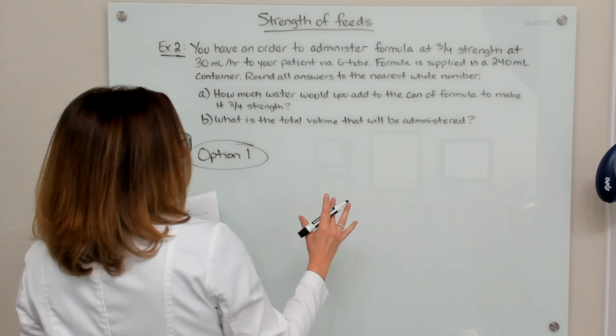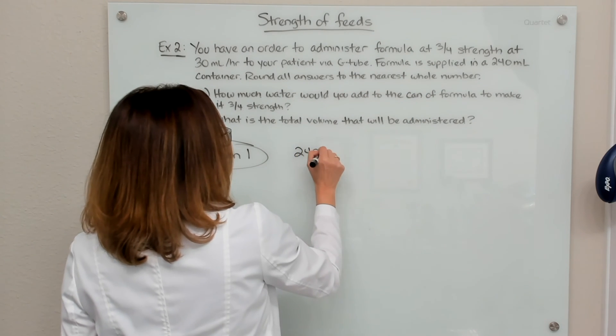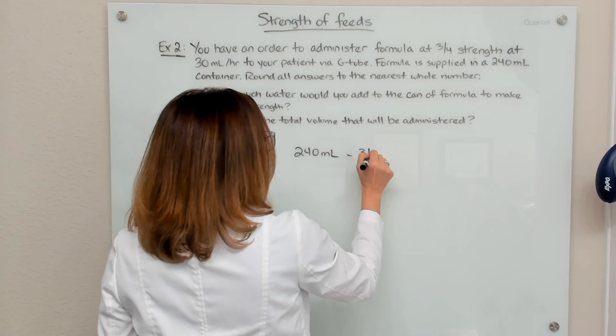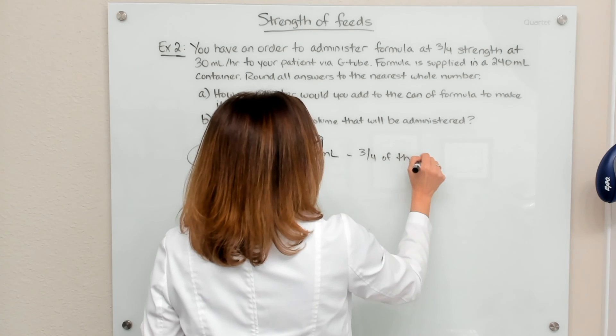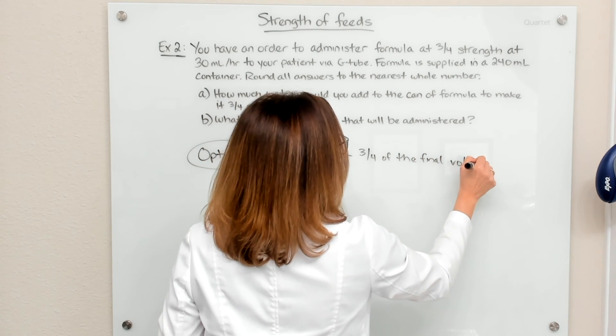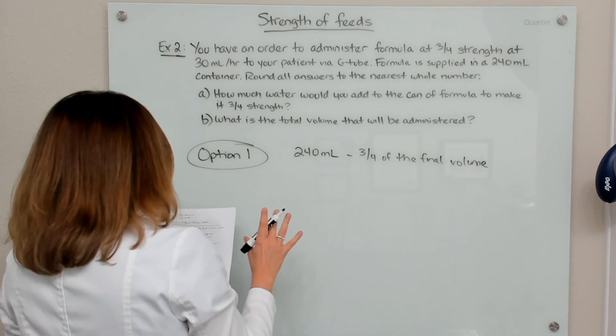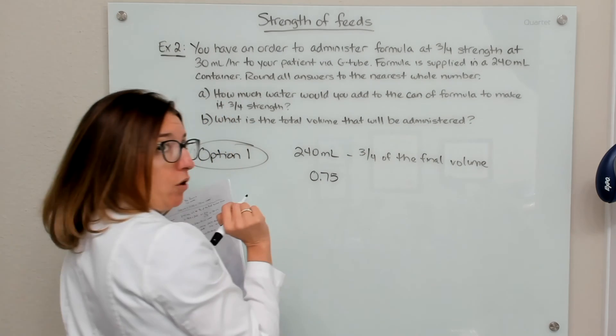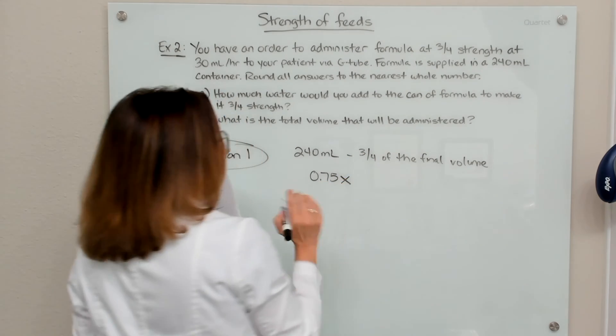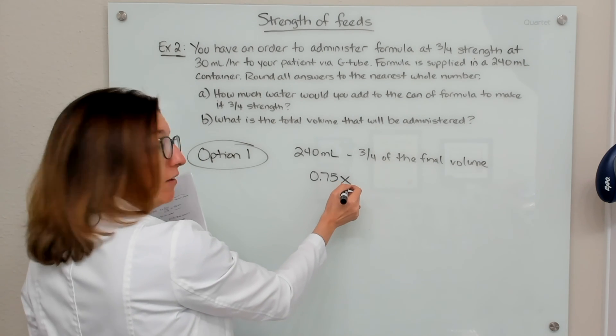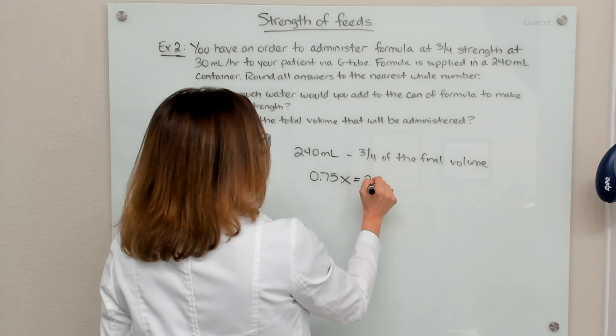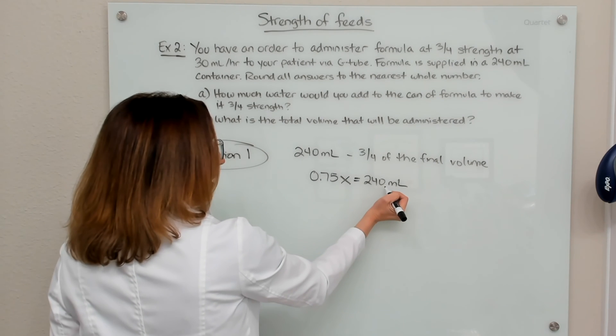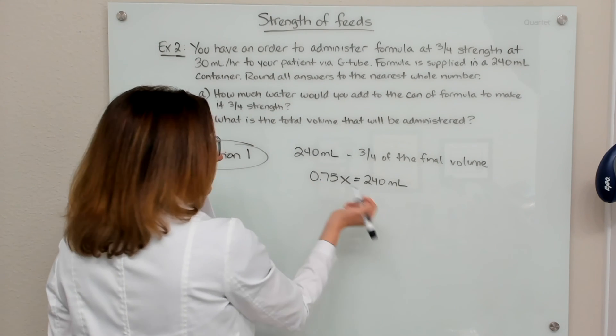So with option one, we know that our 240 ml of formula is going to be three quarters of the final solution, right? The final volume, because we need to add water to it. So we can actually set up an equation here. We can say 0.75, which is three quarters of the final volume of the solution, which we don't know what that volume is. So it's x equals 240 ml.